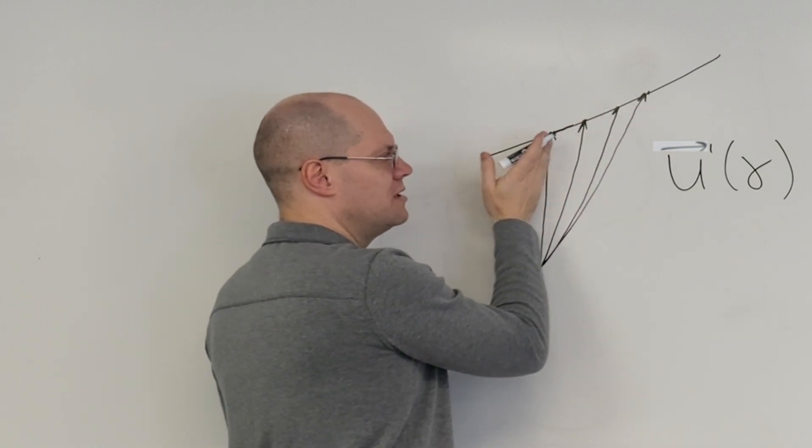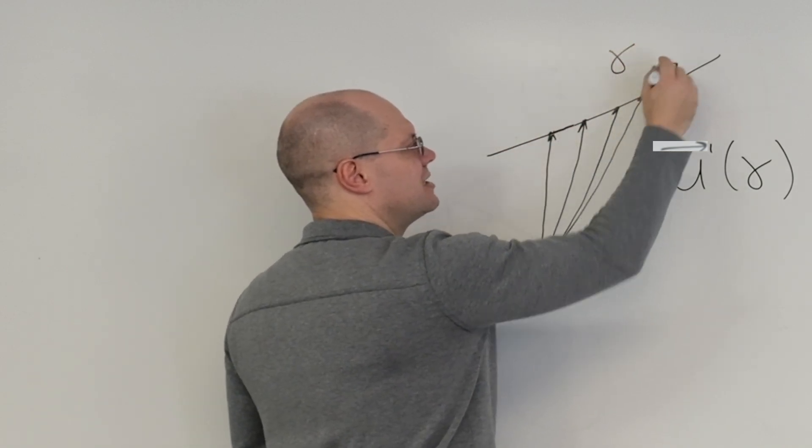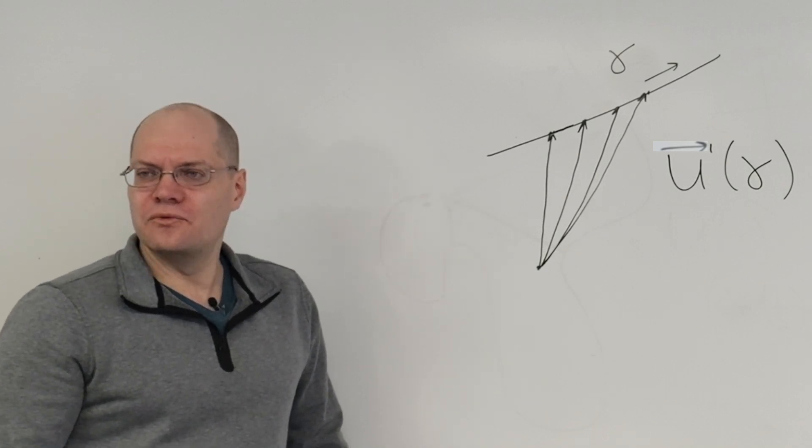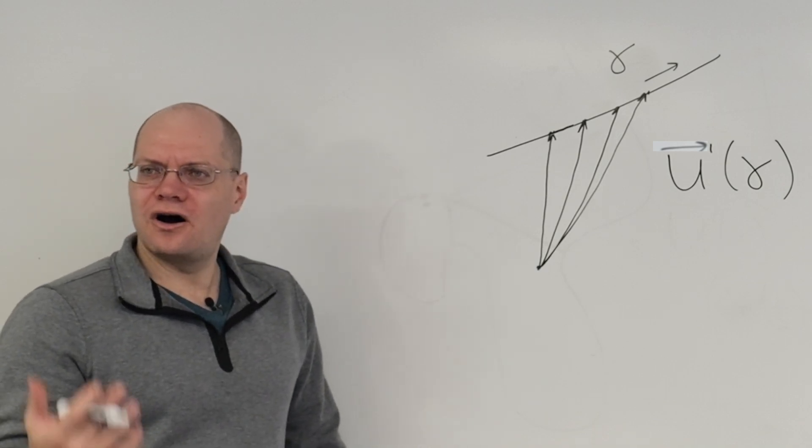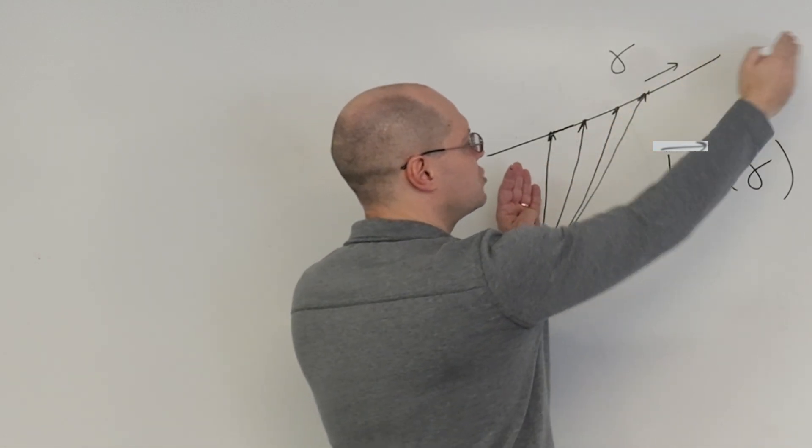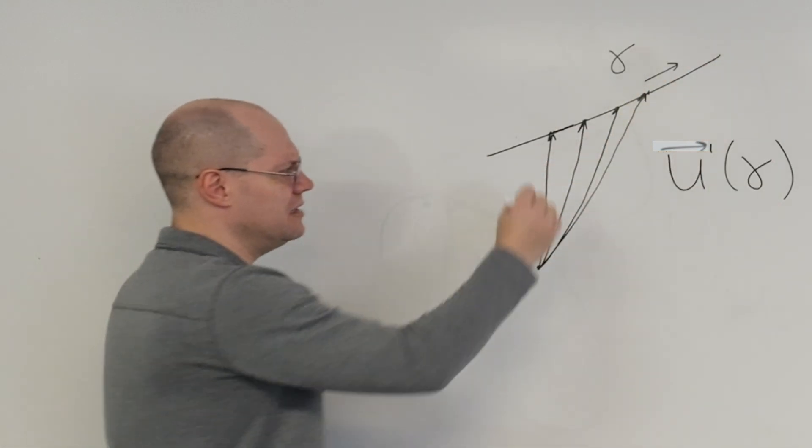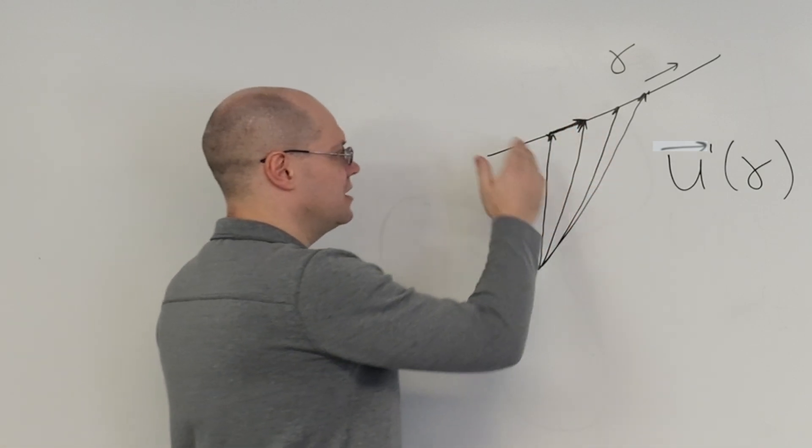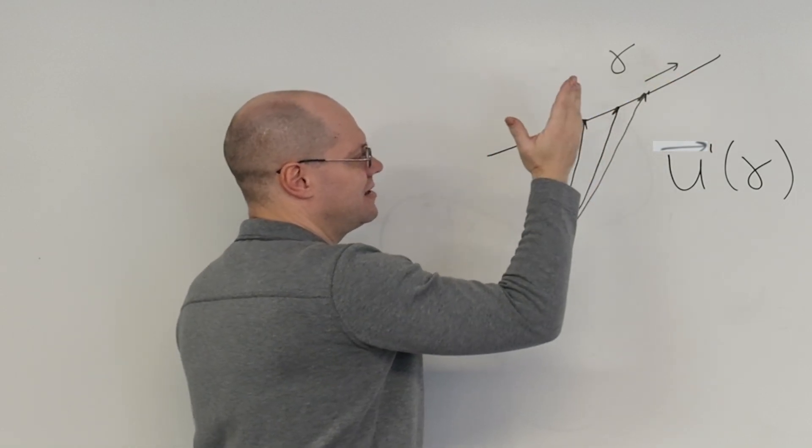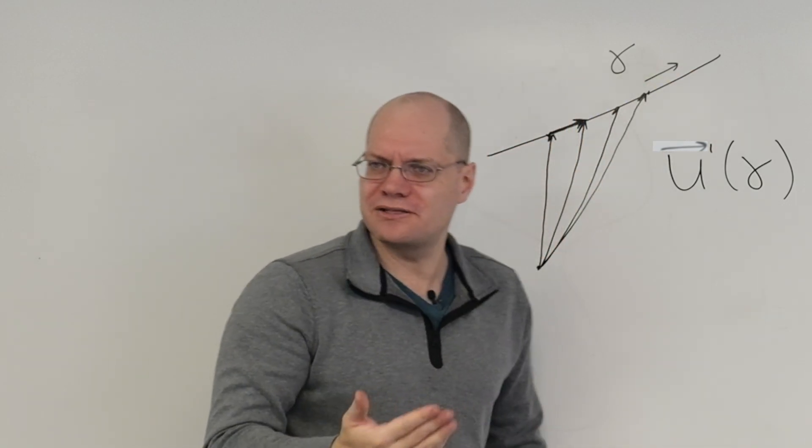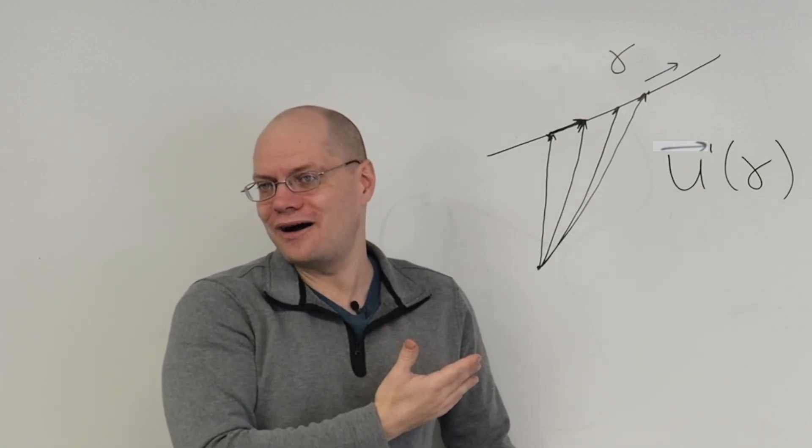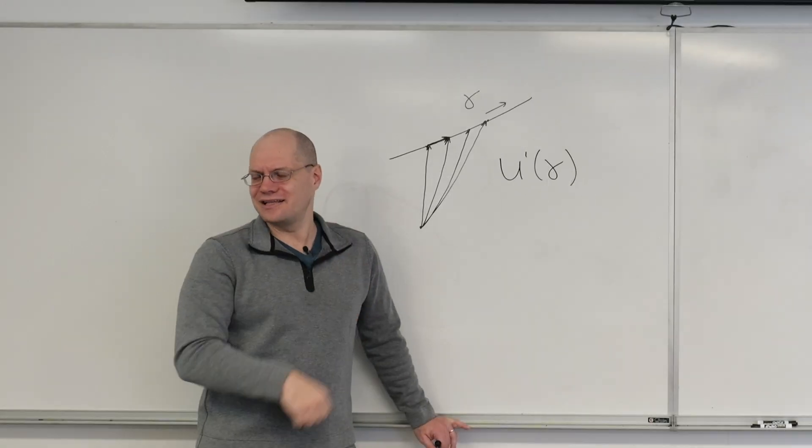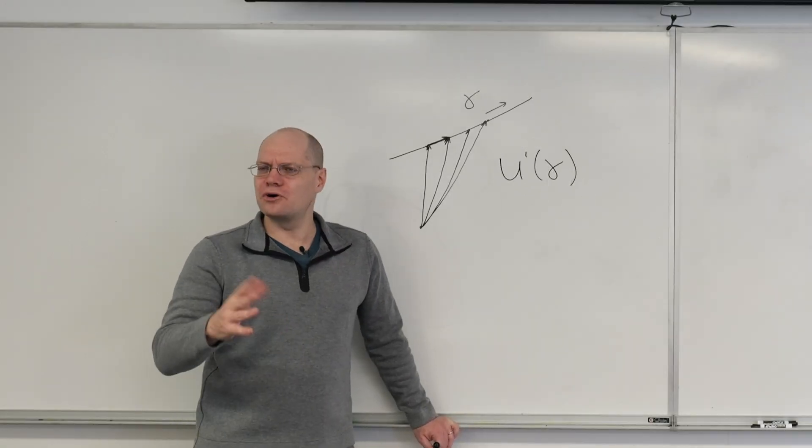And then because our parameter gamma is increasing in this direction, it'll point this way. And then its magnitude will really depend on the parameter. Does it change quickly or slowly? And I think it'll basically be this vector. It's a vector that points along the straight line and has this length. That's a full geometric specification. So that's one problem that you can certainly do from beginning to end. But this is a little bordering on trivial.